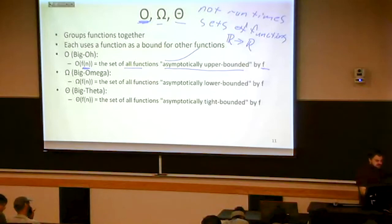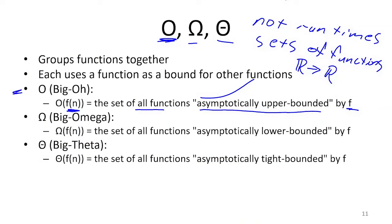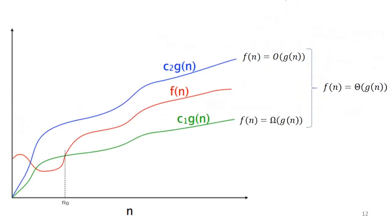And then big theta is those that they could eventually rise above or potentially rise below, depending on constants. So we're going to do an illustration first of this. So let's say that I have some function G of N. I want to know, does F of N belong to big O of G of N? So does F of N belong to big O G of N? So what we want to know is, can we make it so that eventually F of N becomes upper bounded by G of N within a constant factor, is the idea here.